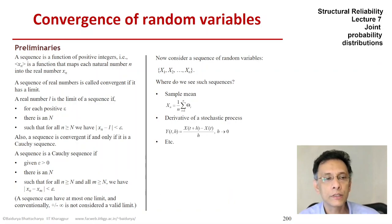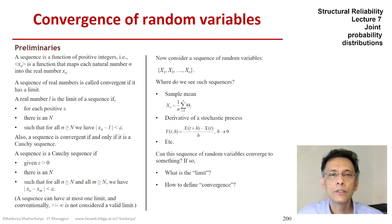We have not talked about stochastic processes yet, but it's basically a random function in time. So if we take the ratio, as you see on the screen, for different values of h, for smaller and smaller values of h, every time we get a new random variable, which we call yt comma h. And so does this sequence of random variables converge to something so that we can define that as the derivative of the process? So in such situations, what would be the limit and how to even define convergence?